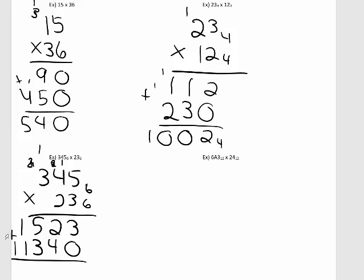So now we add. 3 plus 0 is 3. 2 plus 4 is 6. How many groups of 6 can I take out of 6? That's 1 with a remainder of 0 — write 0, carry the 1. 1 plus 5 plus 3, that is 9. How many groups of 6 can I take out of 9? That's 1 with a remainder of 3 — write the remainder, carry. 1 plus 1 plus 1 is 3. And then we just have 1 here. Don't forget the base 6. So my answer in this case is 13303 base 6.